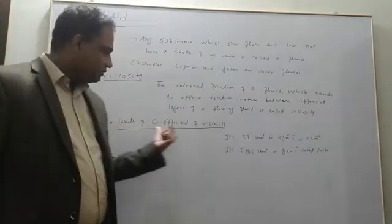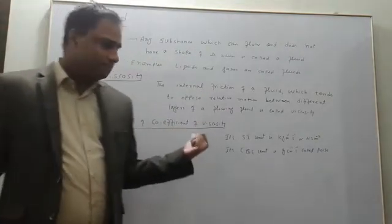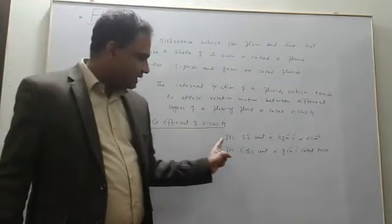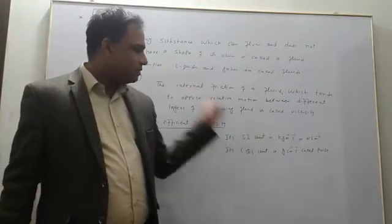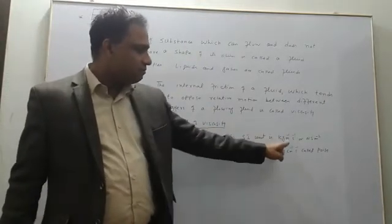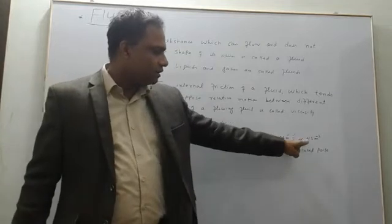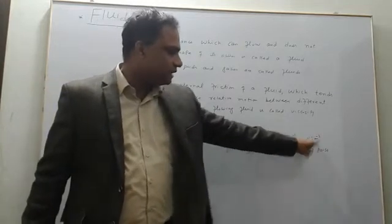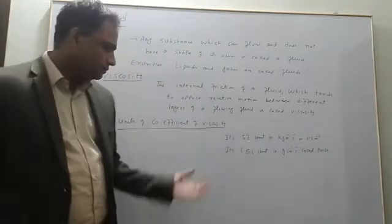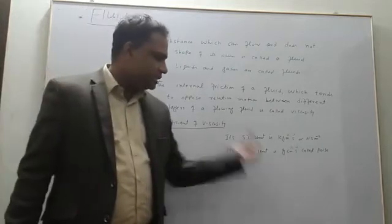Different units of coefficient of viscosity are: SI unit of coefficient of viscosity is kilogram per meter per second, or it is also called Newton second per meter square. CGS unit...